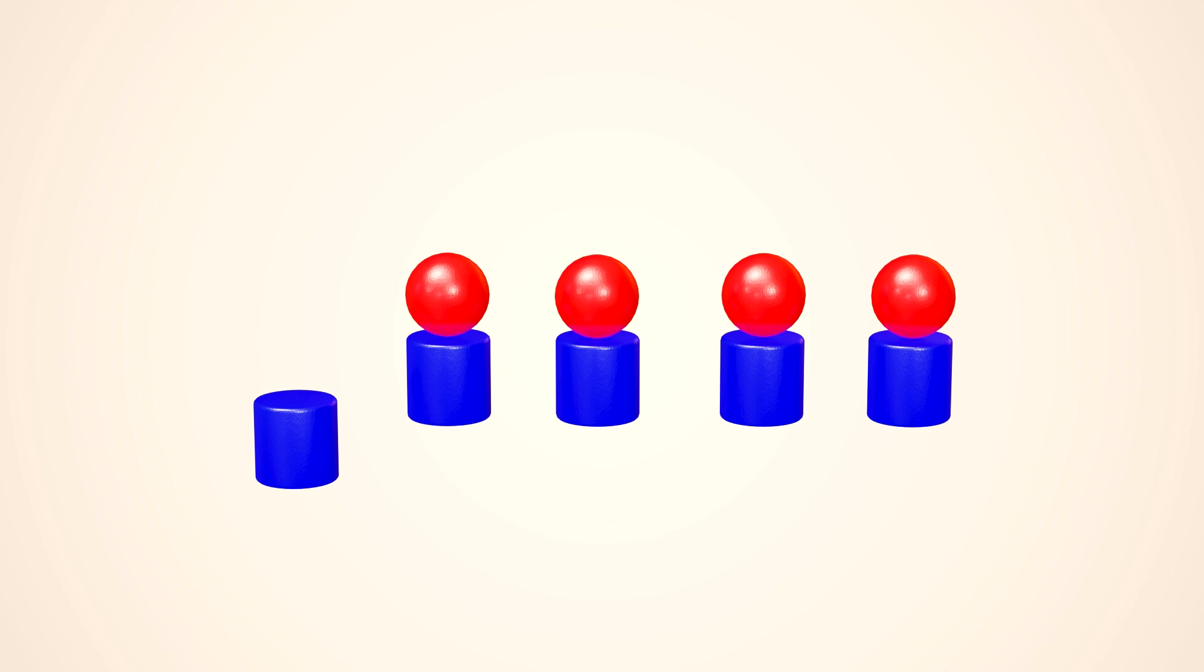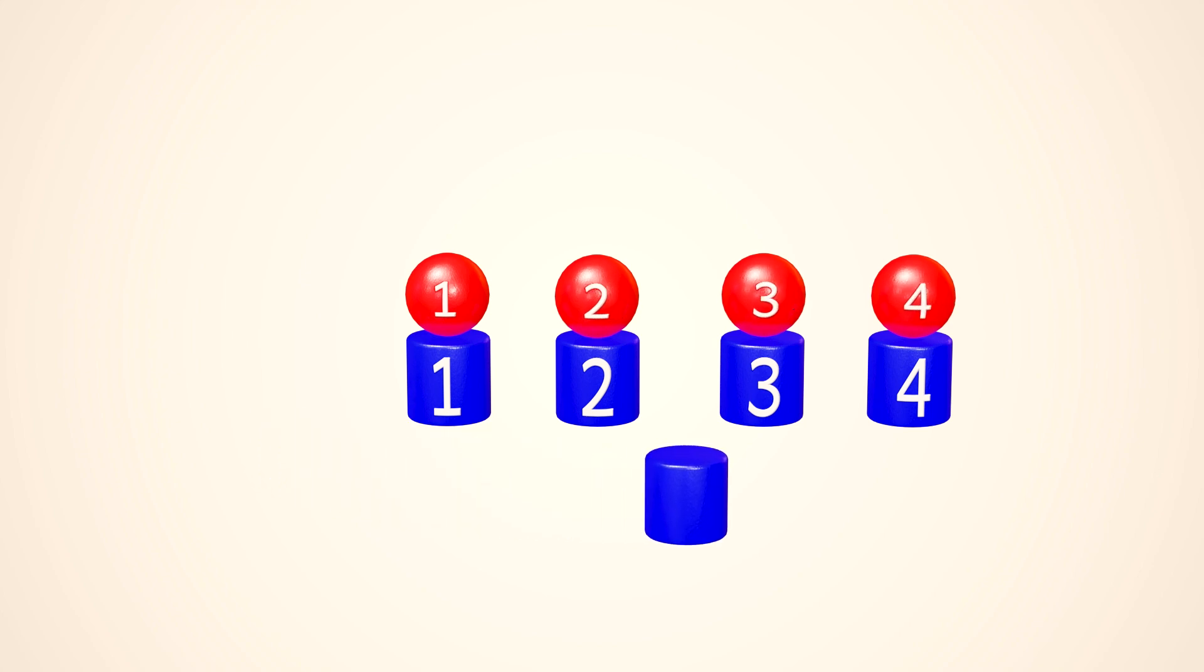To be more certain, let's count the blue cylinders. One, two, three, four. And there is still one without a pair. Now, count the red spheres. One, two, three, four. Here the fifth blue cylinder.